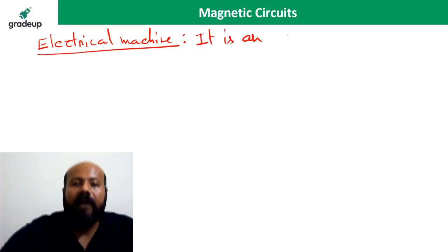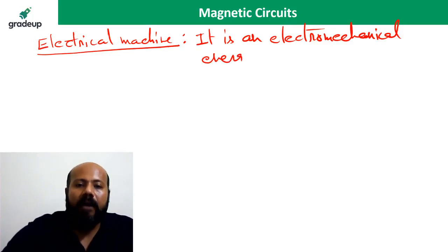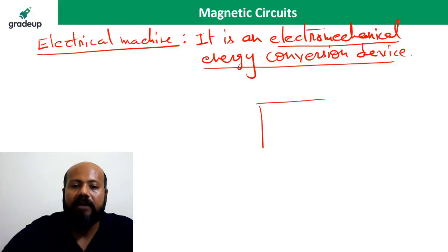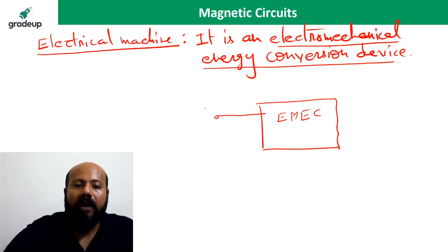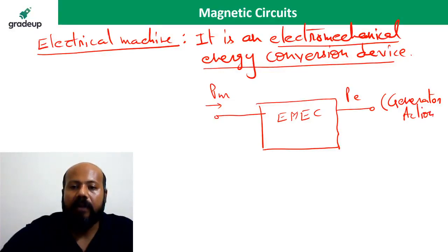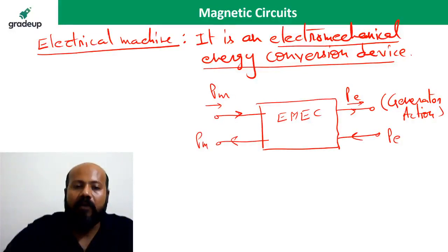A machine is nothing but an electromechanical energy conversion device, abbreviated as EMEC device. Anupam Verma explains it well: it converts mechanical energy into electrical energy and vice versa. This is a beautiful explanation.